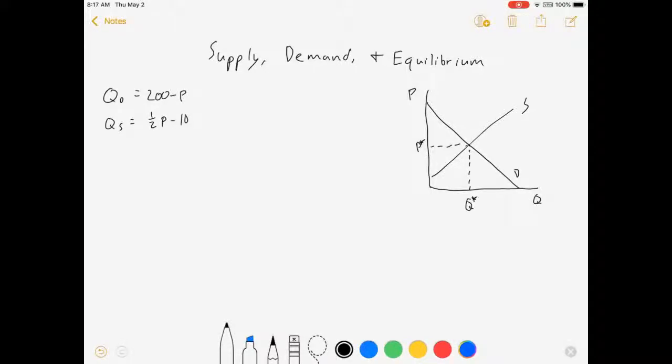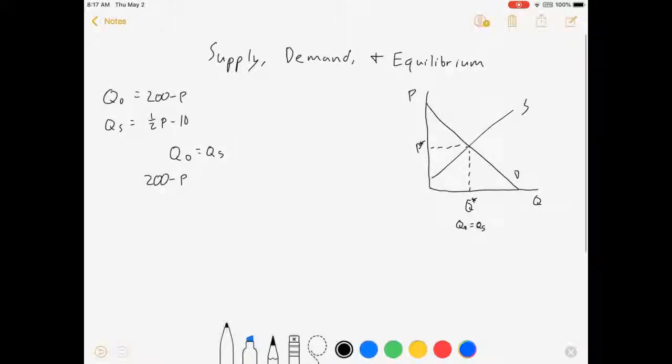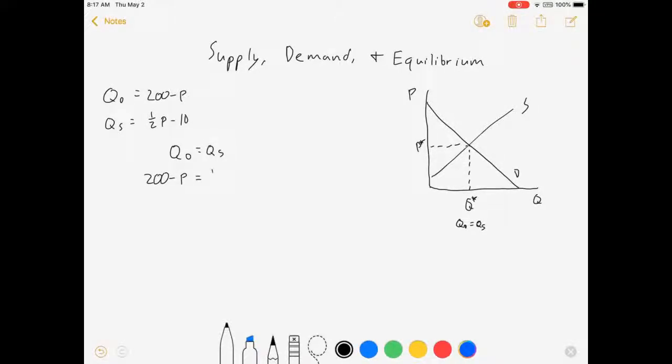To do that, all we really have to do is set QD equal to QS. And that's where the quantity on the demand curve equals the quantity on the supply curve is right there. So, mathematically, I'm just going to set QD equals QS. 200 minus P equals 1 half P minus 10. So, 210 equals 3 halves P. That means that P is equal to 140.